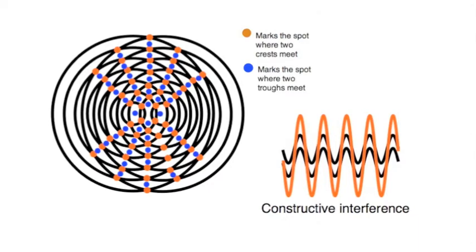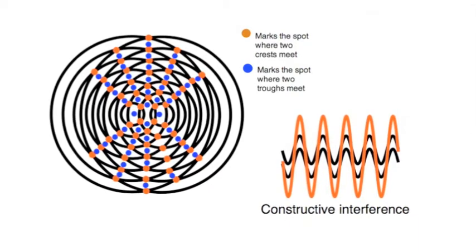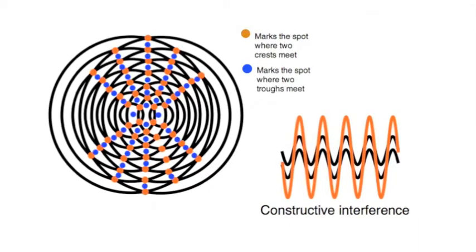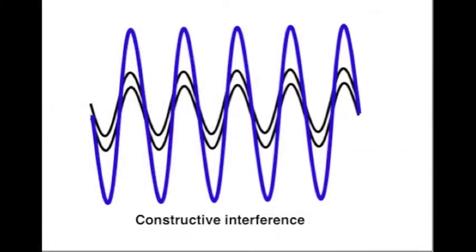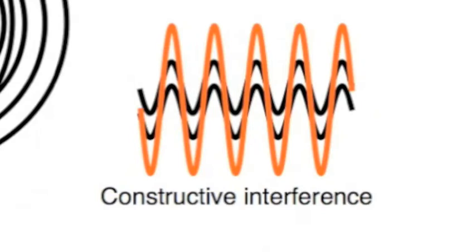Two crests meeting, two lumps of water add together to produce a big crest, and similarly, two troughs add together to produce a large trough. This is called constructive interference, and that's why we can see a large distinct wave in the pattern.